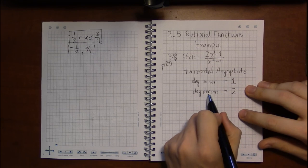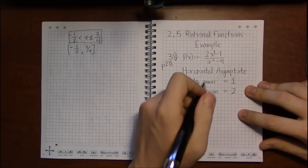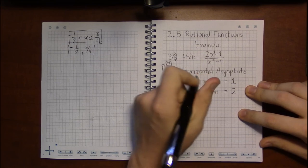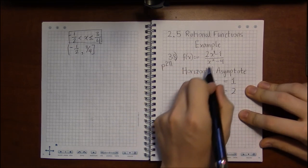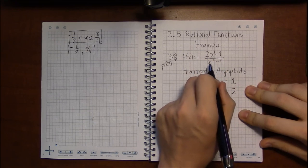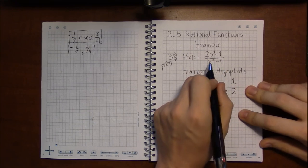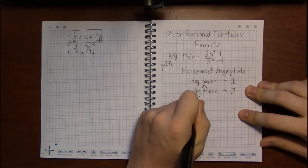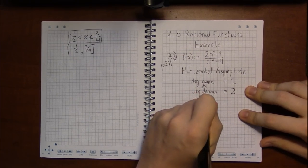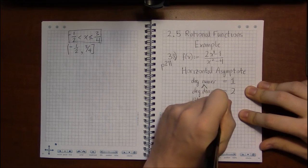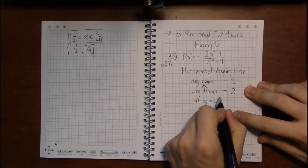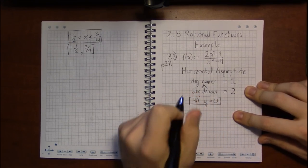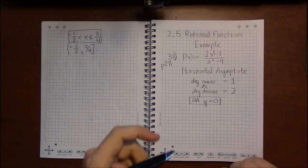So since the degree of the denominator is larger, I kind of term this bottom heavy. Since the degree of the denominator is larger, the bottom is heavier in terms of degree, the horizontal asymptote, as a rule, is just y equals 0. And that's it. That's the rule. If you want to know why, take calculus. They'll explain why.